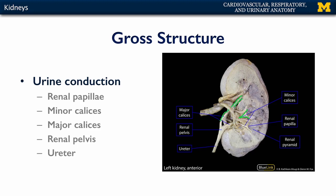The minor calyces then feed into major calyces, which are a little bigger, and then finally into the renal pelvis. On the cadaveric specimen here, you can see it really isn't that large of a space before finally draining into the ureter on the way down to the urinary bladder.